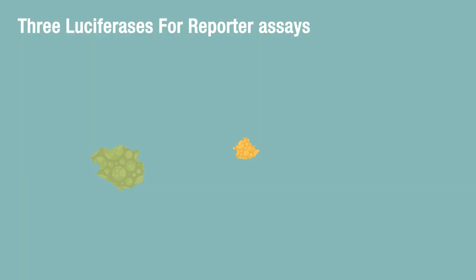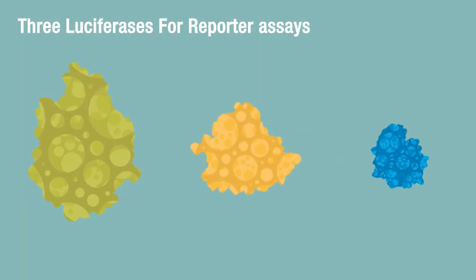Promega supplies three different luciferases for reporter assays. Firefly luciferase is great for routine genetic reporter assays. Renilla luciferase is used as a control. And NanoLuc luciferase, a smaller, brighter luciferase best suited for research in challenging biological systems, can be used as a single reporter or as a primary or secondary reporter in the NanoDLR assay.